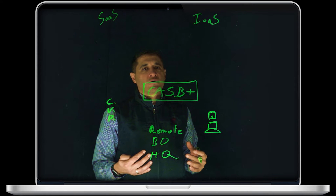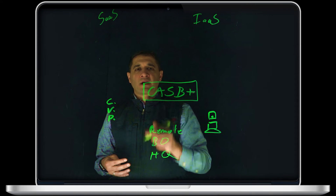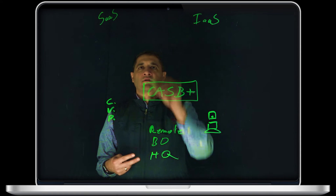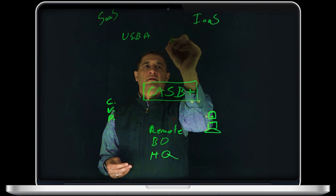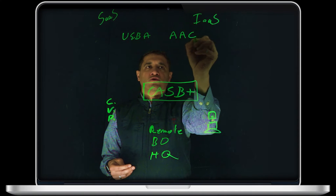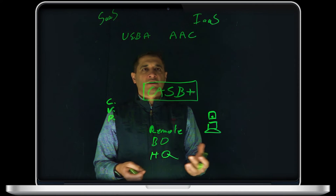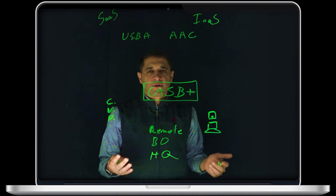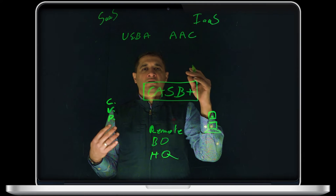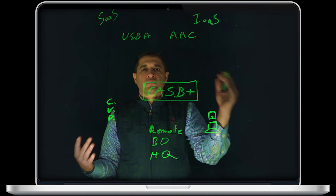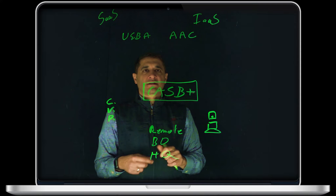Specifically from a user behavior and user access perspective, there are two technologies you have to look into: UEBA and Adaptive Access Control. CypherCloud has a very unique technology that stacks on top of both of these, both for application as well as access, and that's called Secure SaaS Workspace. That's truly a combination of these technologies.